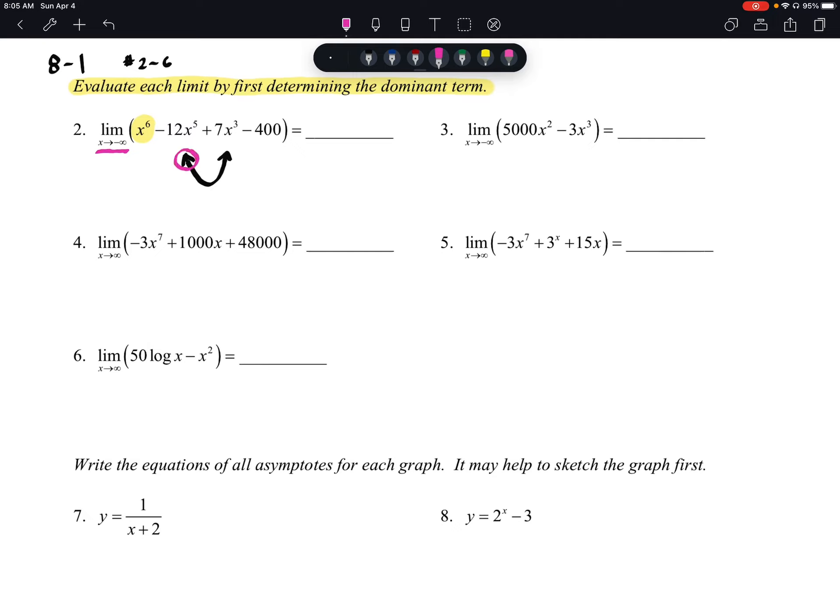Well, our graph is pointing up to the left. That means we are going to be at positive infinity as our x approaches negative infinity.